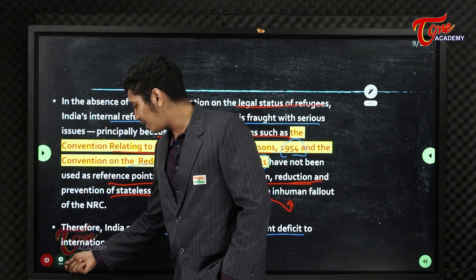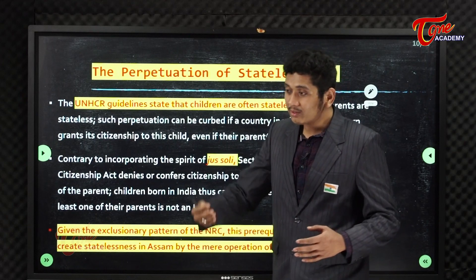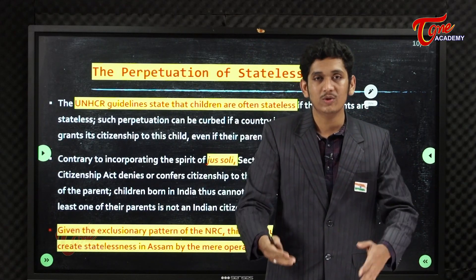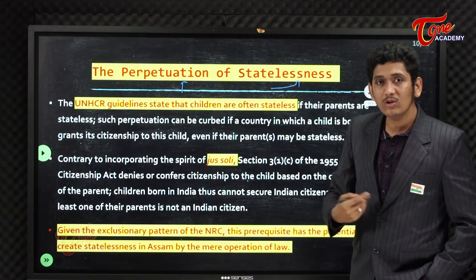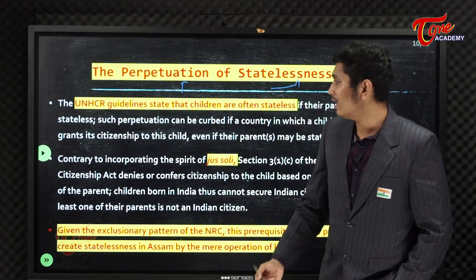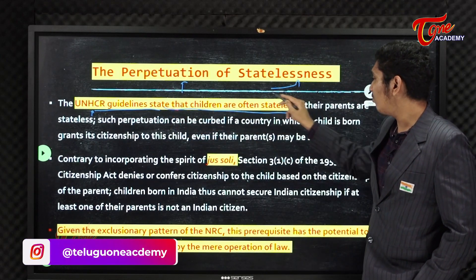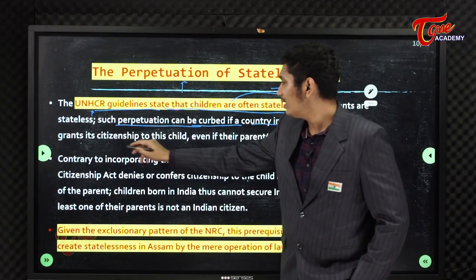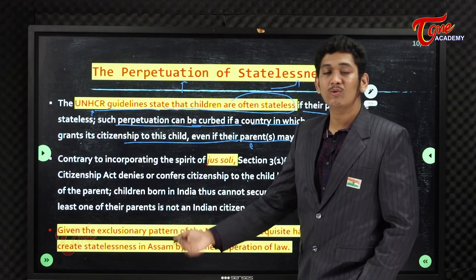The perpetuation of statelessness is a serious concern. According to United Nations Human Rights guidelines, children are often stateless if their parents are stateless. Such perpetuation can be curbed if the country in which the child is born grants citizenship to that child even if the parents may be stateless. If parents are stateless, the children born to them are also stateless.